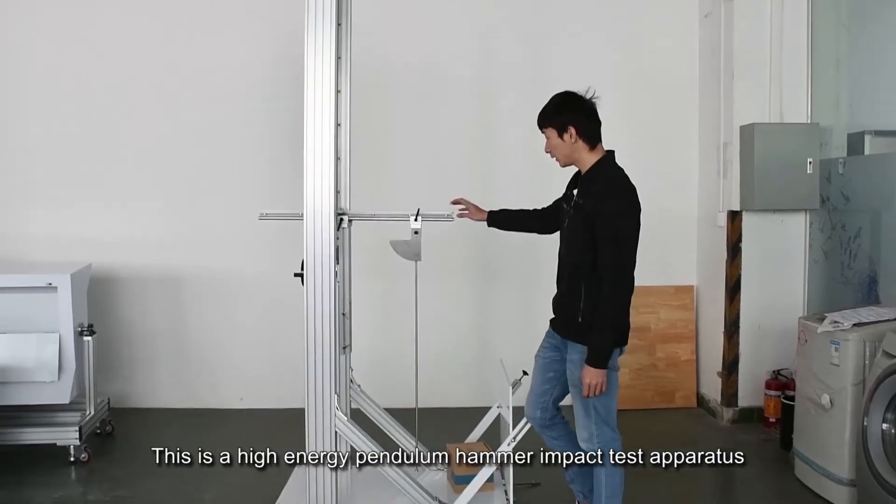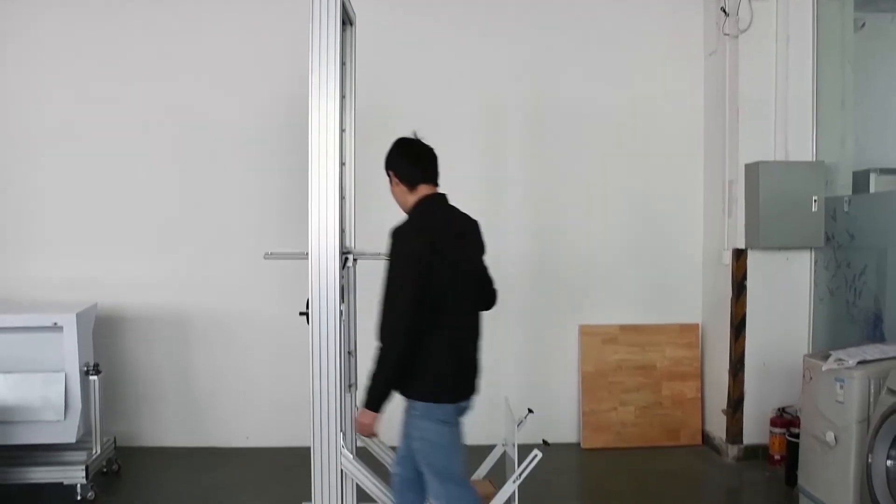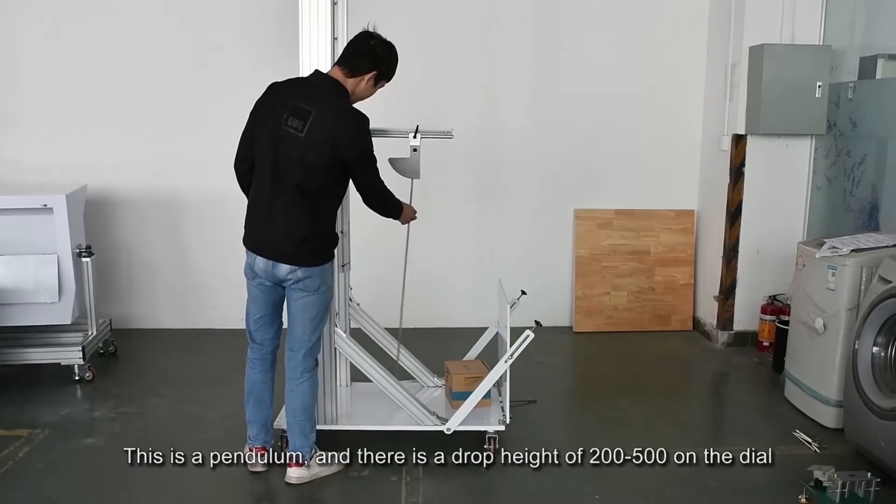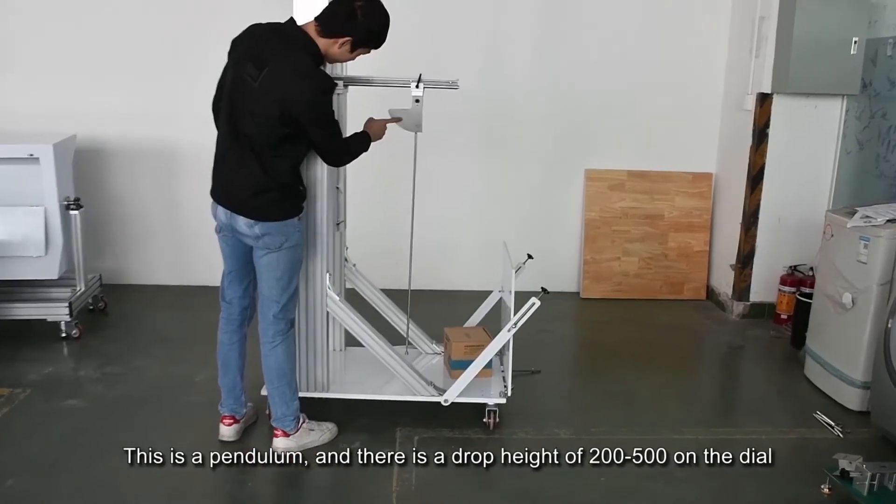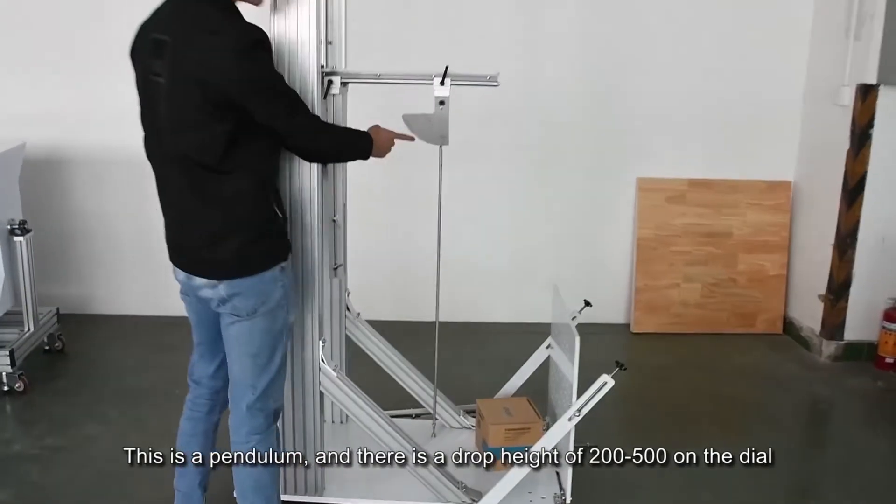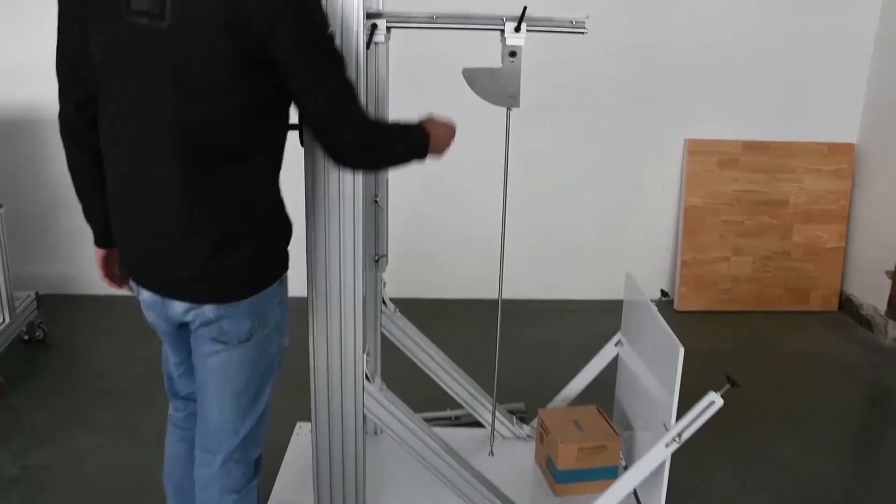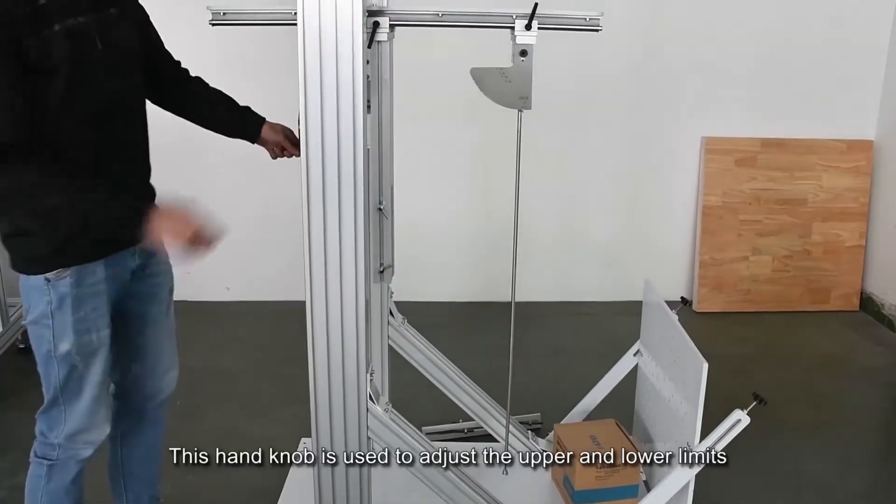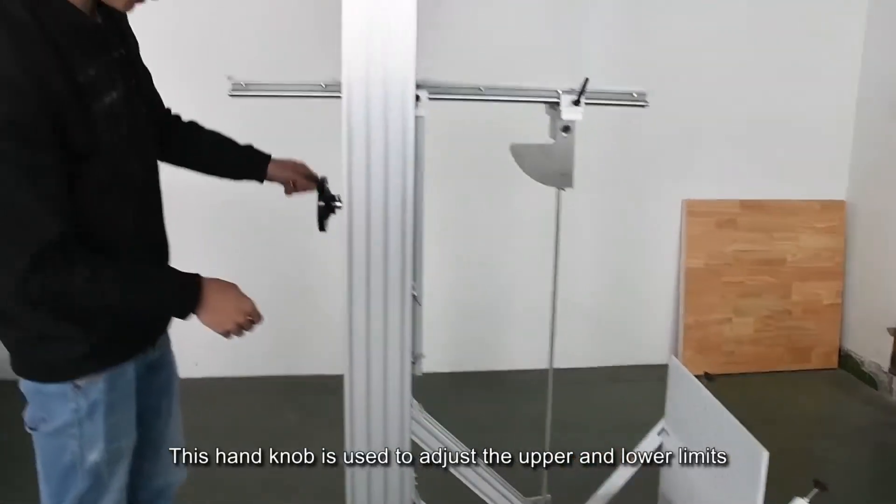This is a high-energy pendulum hammer impact test apparatus. This is a pendulum and there is a drop height of 200 to 500 on the dial. This hand knob is used to adjust the upper and lower limits.